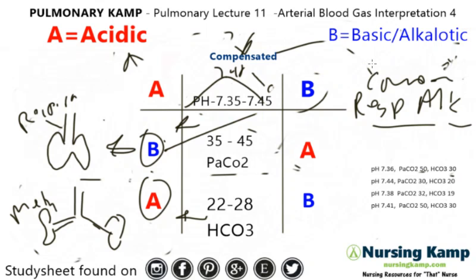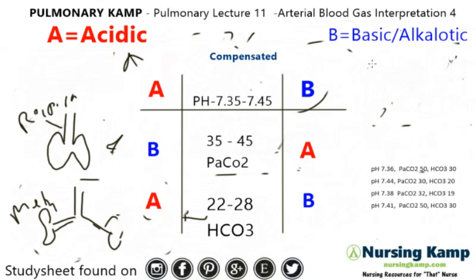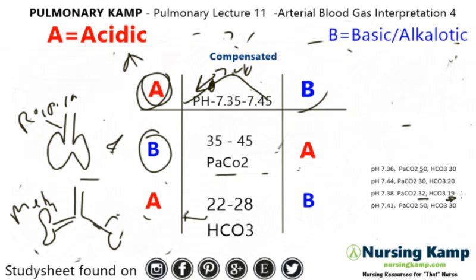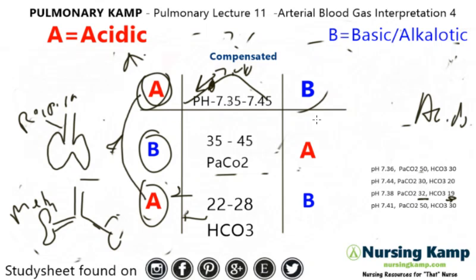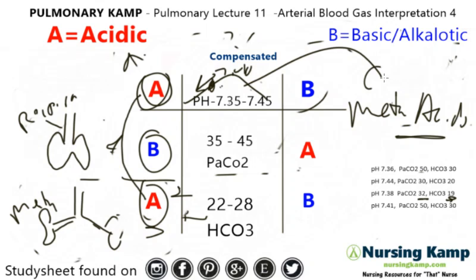Next example: a pH of 7.38. The midpoint is 7.40, so 7.38 is closer to the acidic side — we encircle A. A PaCO2 of 32, which is definitely on the alkalotic side. A bicarb of 19, also on that side. We connect the last two: we know it's an acidosis, and it's connected to the metabolic system. So it's metabolic acidosis. And because the pH is in the normal range, it's compensated metabolic acidosis.